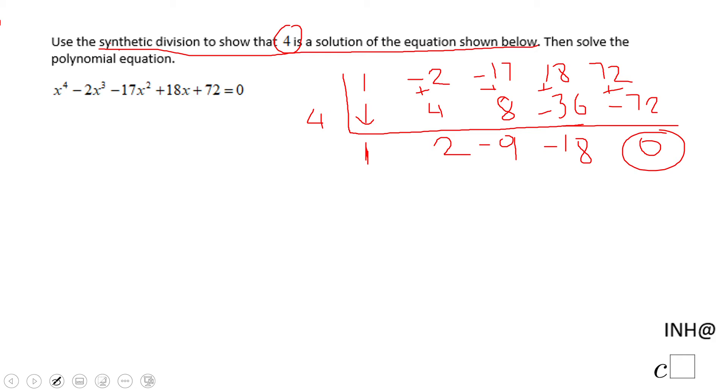And if we add, we get 0. We should expect to get 0 because this says that 4 is a solution of the equation shown below, which means it is a factor of this 4th degree polynomial. Let me show you what that means for us.